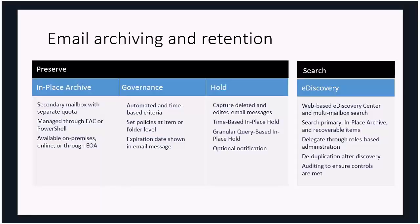Within Office 365 email we have the ability to implement an in-place archive. Every Office 365 plan that includes email has archiving ability. Basic plans allow 50GB total shared between the inbox and in-place archive; the in-place archive lives always in the cloud and is not synced to the local machine. More advanced Exchange plans allow effectively unlimited archives — locally the maximum you can synchronize in your OST file is 50GB, but with an advanced plan you can have as much information as you want stored in the archive in the cloud. You can also set automatic archiving policies across your organization.